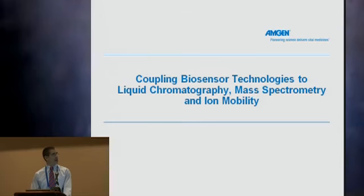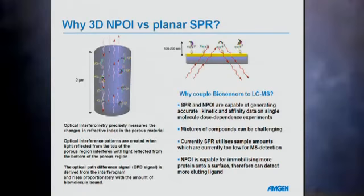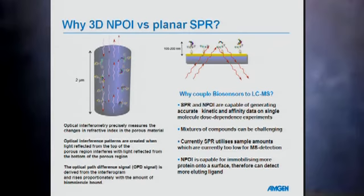In the final eight or so minutes, I'm going to talk about coupling biosensor technologies to liquid chromatography and mass spectrometry. Biosensors allow you to immobilize a protein or enzyme of interest to a surface, then flow over small molecules, peptides, or proteins, and measure the binding constant — the on rates, off rates, and KDs. That's very important in biopharmaceuticals because you want to understand how well a small molecule binds to a target of interest. What we've chosen is nanopore optical interferometry, which essentially measures precisely the changes in refractive index in a pore in the presence and absence of a binding small molecule. This optical path difference is then deconvoluted and a KD, on rate, and off rate are derived.